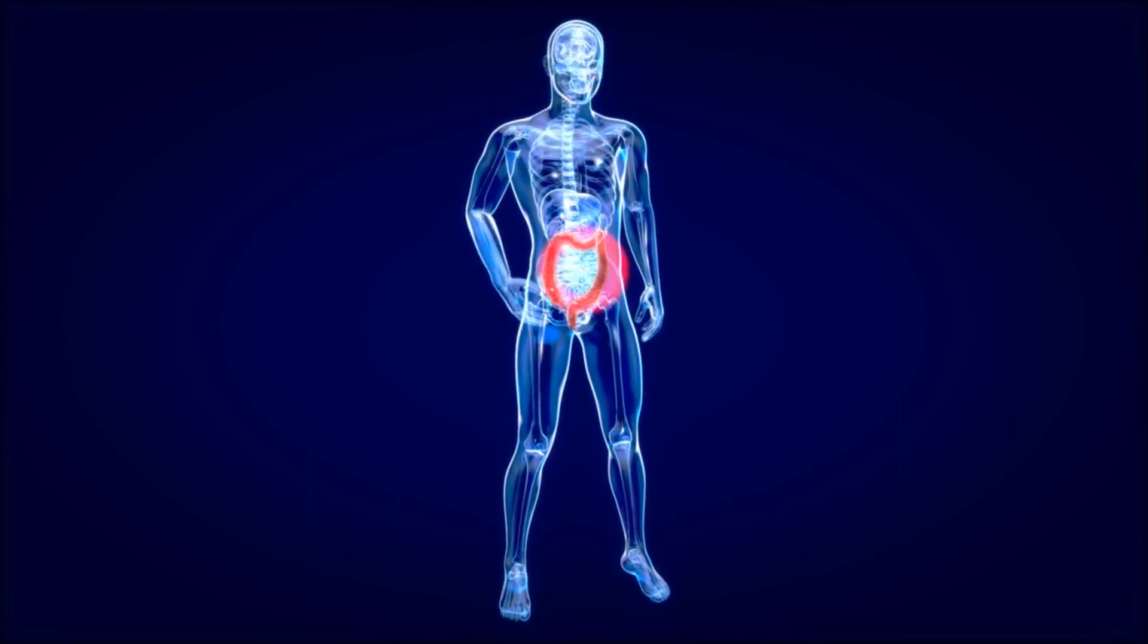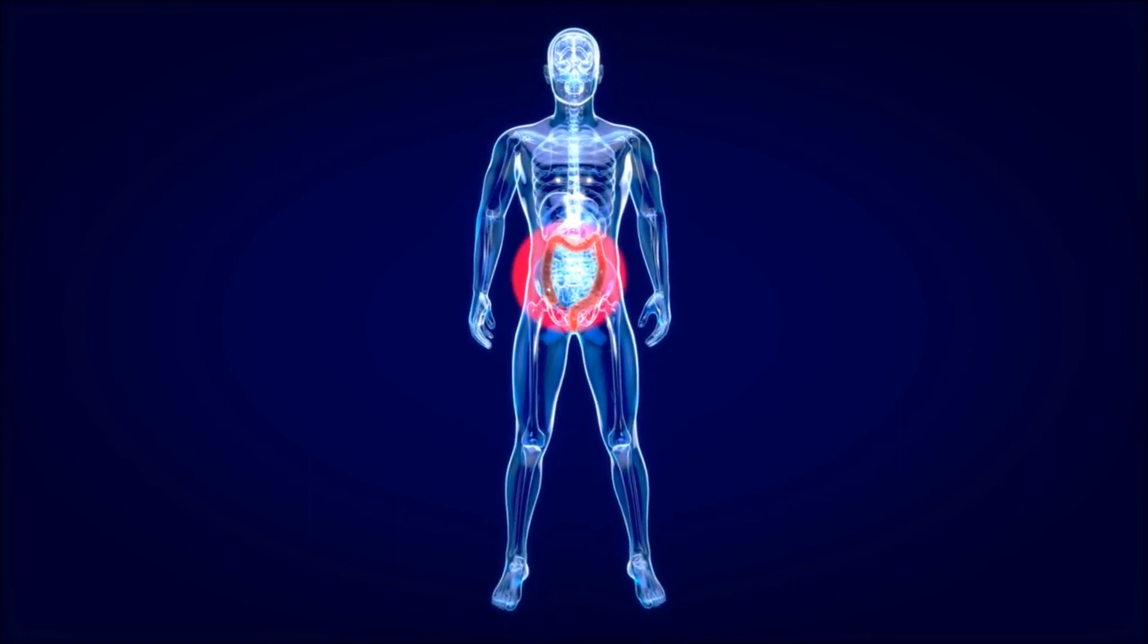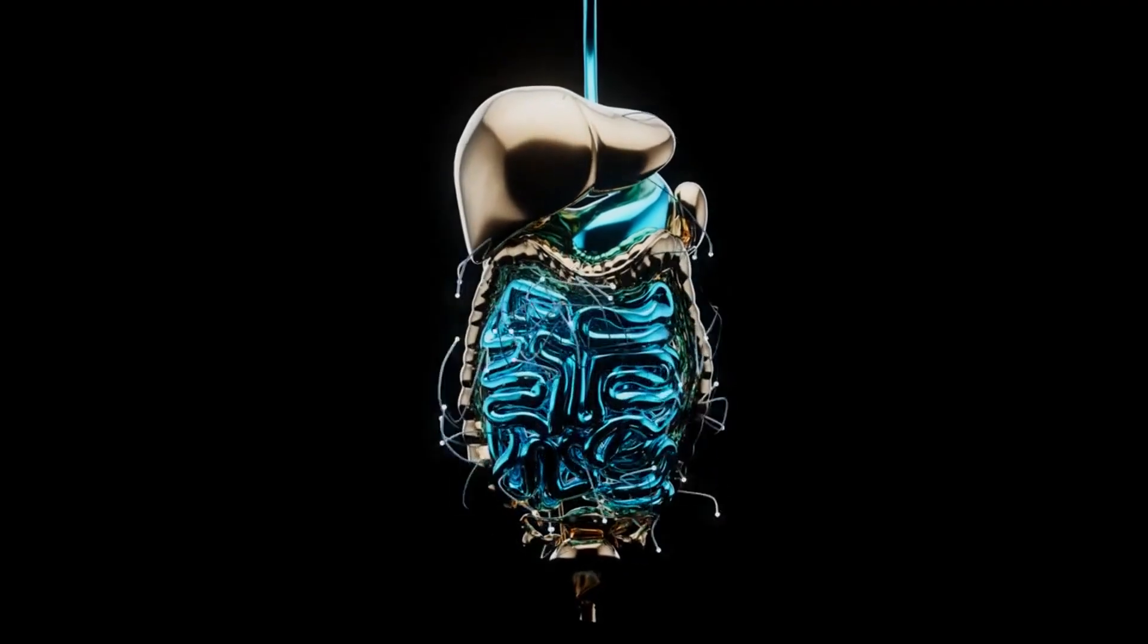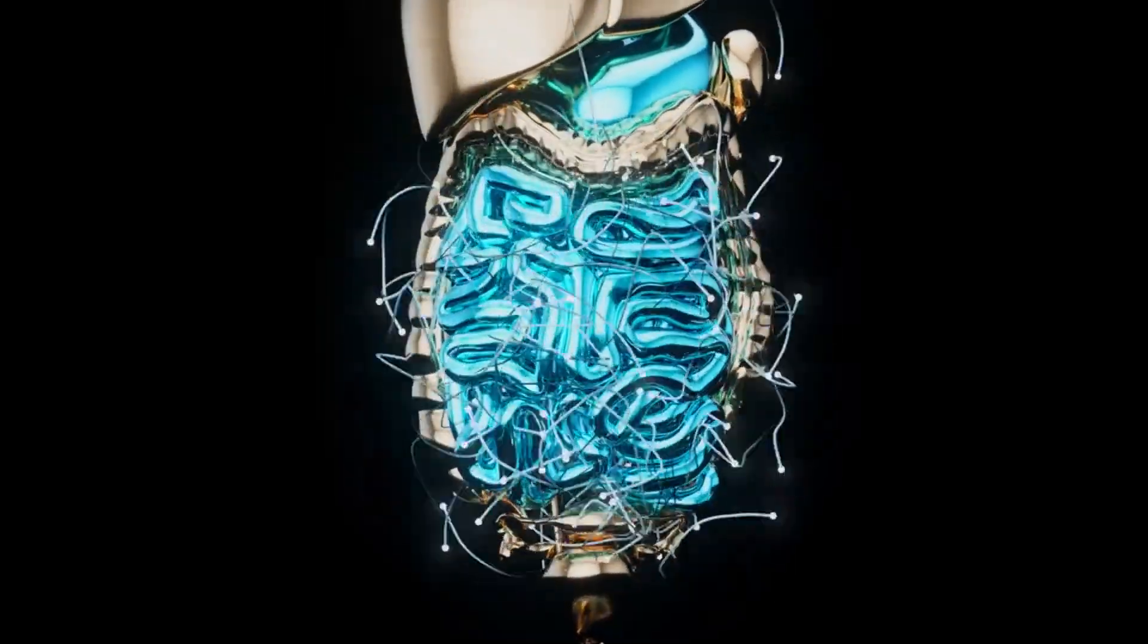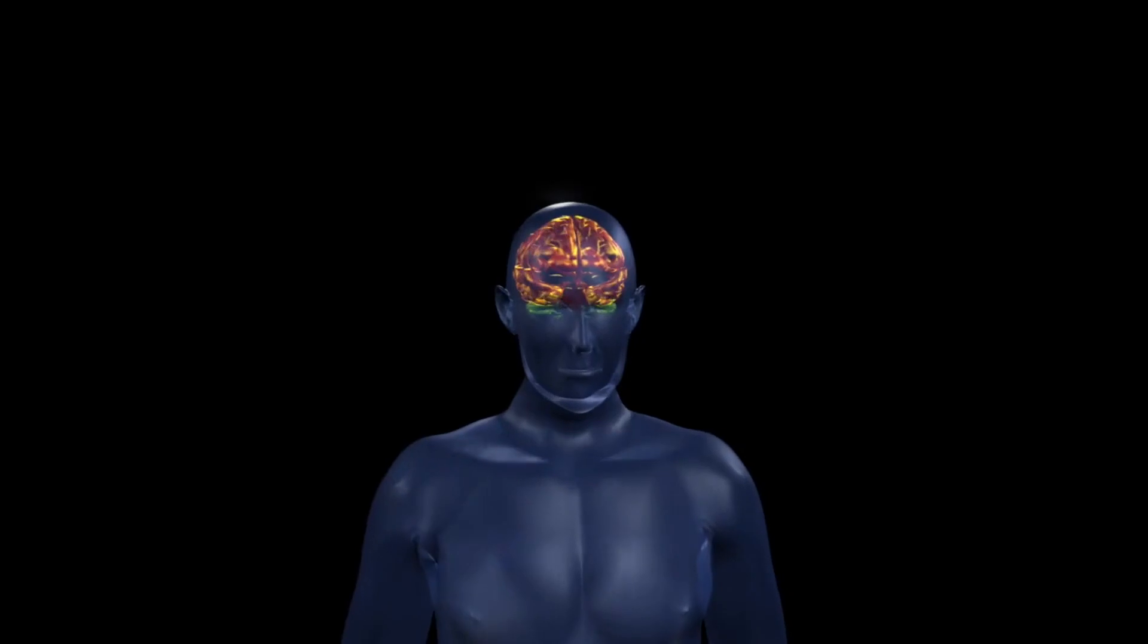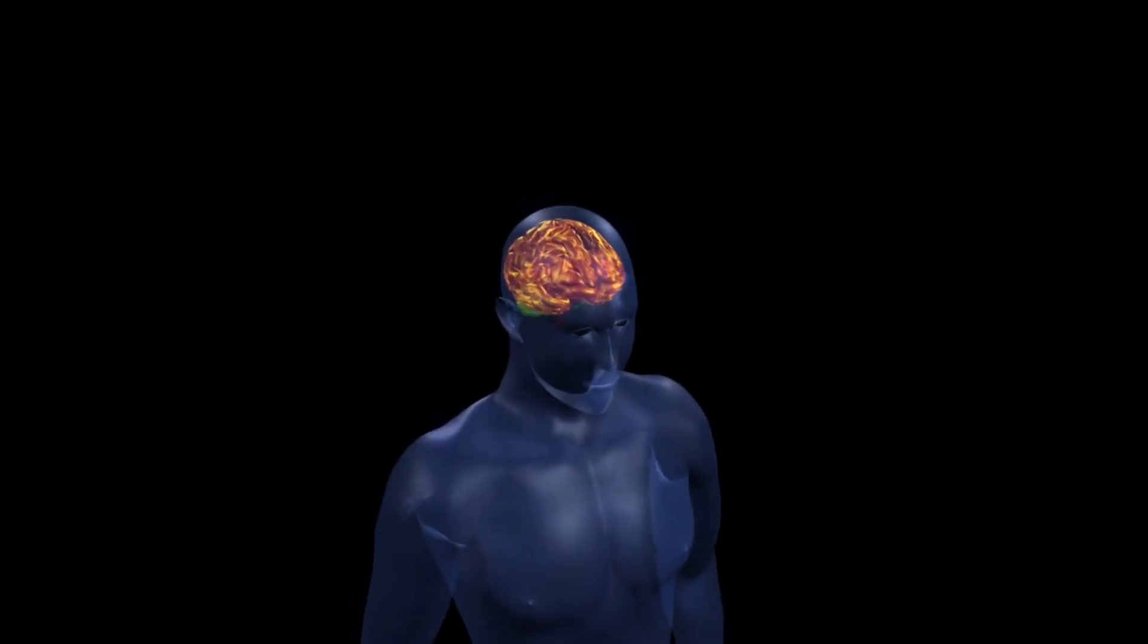The gut-brain axis, a marvelous communication network. The gut and brain are in constant communication, exchanging messages through a network of nerves, hormones, and biochemicals. This communication superhighway is known as the gut-brain axis.